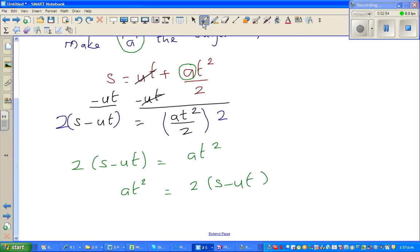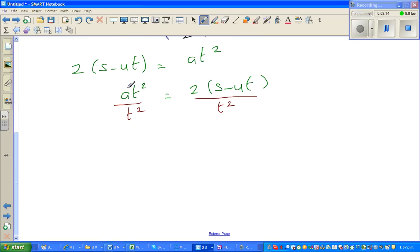Now think, what should I do on both sides to eliminate this t squared? This is a times t squared - you should know this quite clearly. To eliminate this t squared, I have to divide by t squared from this side. So divide t squared on this side. This t squared gets cancelled, and you're left with a equals 2 times s minus ut over t squared.